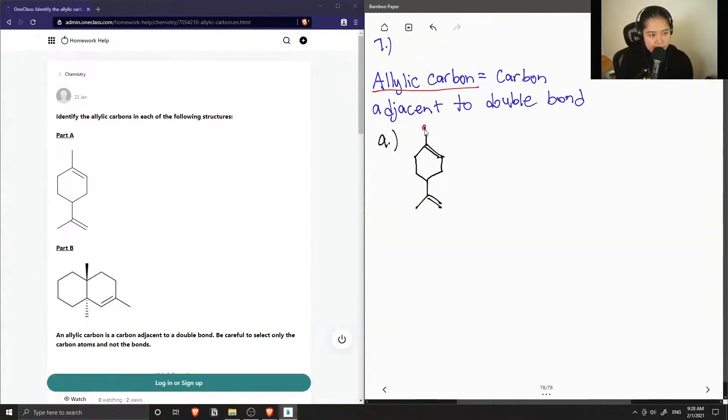So, for example, this carbon. Not this one since it has the double bond, but the one beside it. And the carbon on this side would be allylic. And the carbons here, and here. So these are all of the allylic carbons. And we have five in this structure.